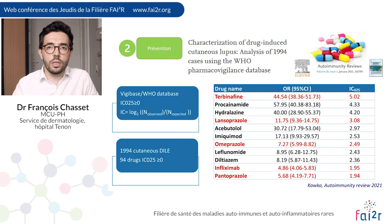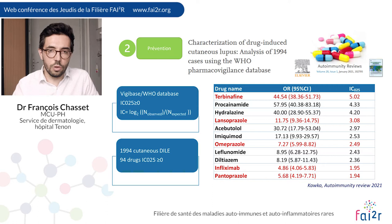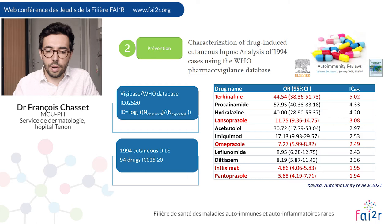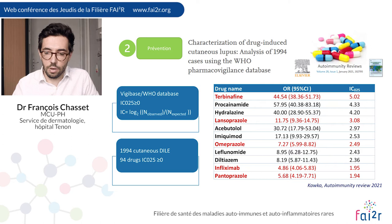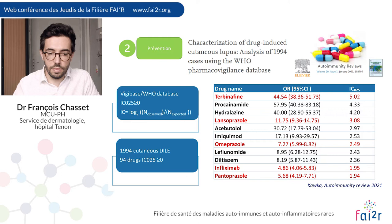A recent study published this year in Autoimmunity Reviews using the WHO pharmacovigilance database showed that among about 2000 cutaneous drug-induced lupus cases, the authors identified 94 drugs with a significant pharmacovigilance signal. Among them, which I think is very important, three proton pump inhibitors — lansoprazole, omeprazole, and pantoprazole — were significantly associated with the risk of drug-induced lupus. This is very important to identify and search for these drugs in subacute lupus patients.